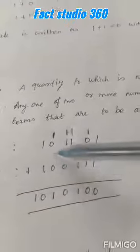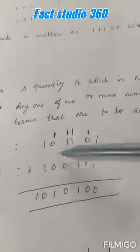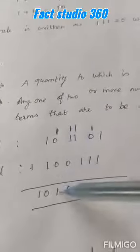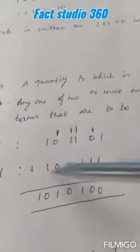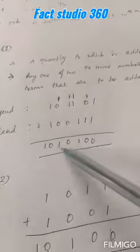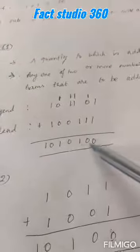There is no more augend at the higher level. So the carry 1 comes down. 1 plus 1 is equal to 10. So the binary addition of 101101 plus 100111 gives the answer 1010100.